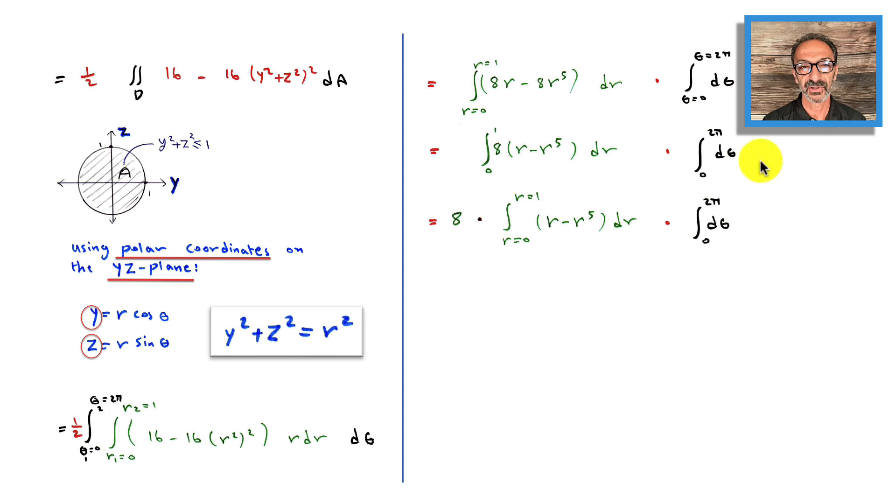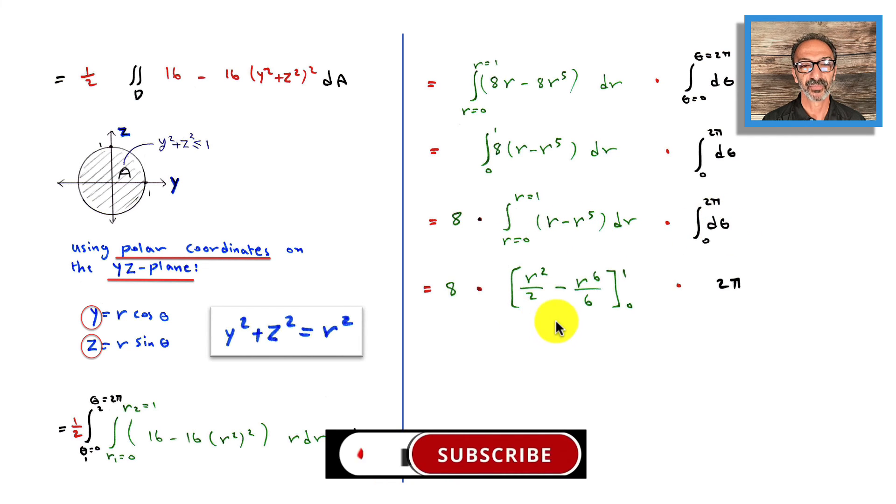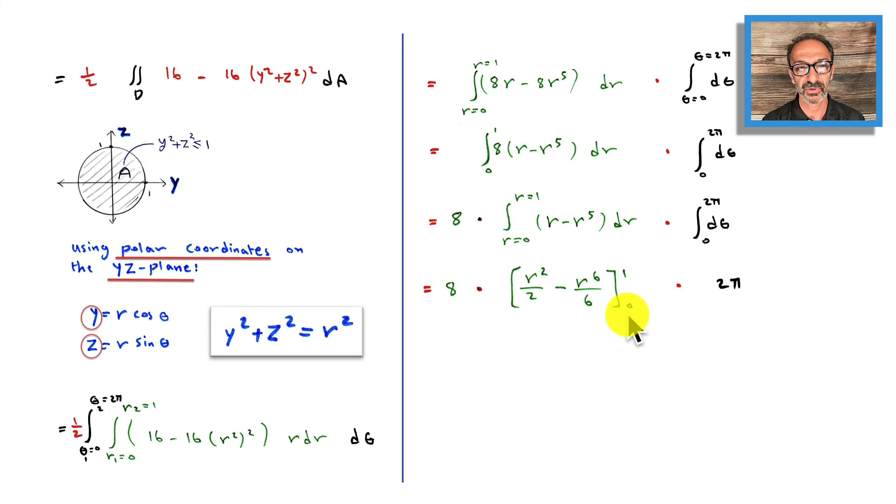We know how to integrate this: 2π is the answer for theta. This becomes r² over 2 minus r⁶ over 6. Plug in 1 and 0. Zero doesn't do anything. Plugging in 1: that's 1/2 minus 1/6, which equals 1/2 minus 1/6.